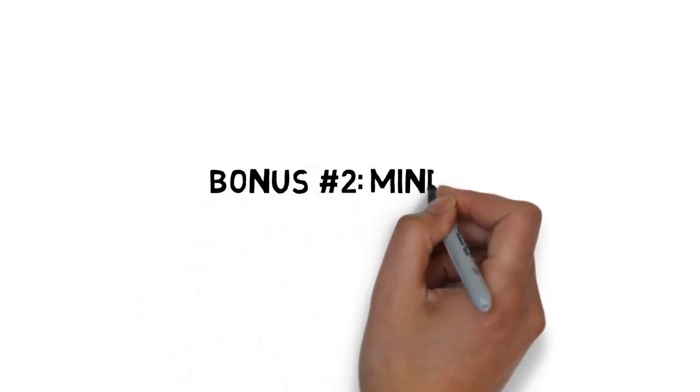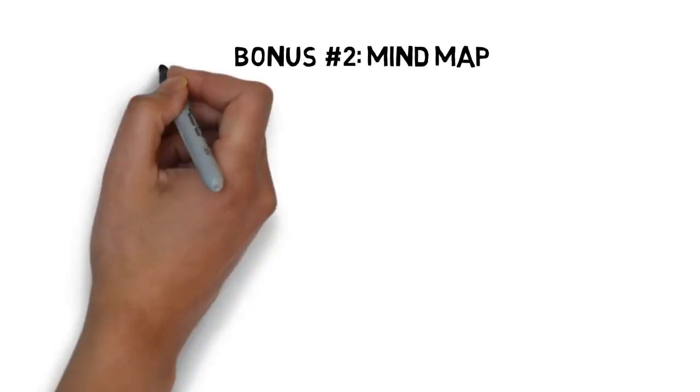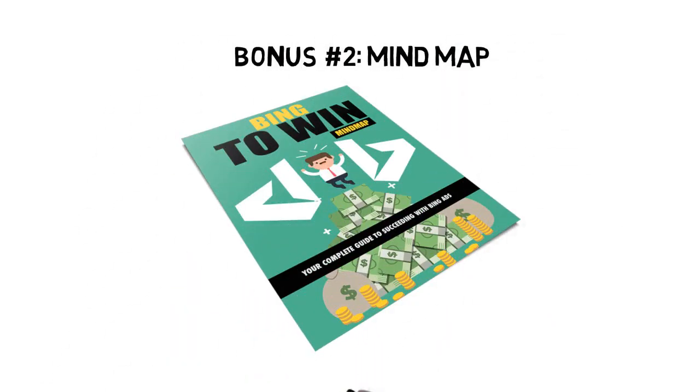Fast action bonus number two is a mind map that gives you an overview of every step you need to apply to see success. It's great for those people that need to see it all laid out in a visual format.